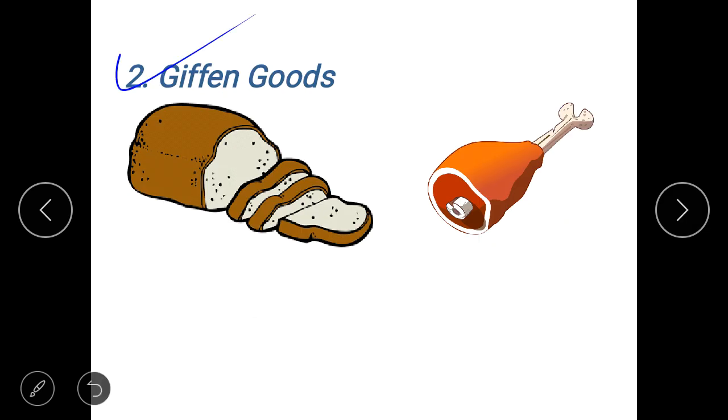Now the other kind of good that does not abide by your law of demand is the Giffen good. A Scottish economist Sir Robert Giffen discovered a very interesting phenomenon in Britain in the 19th century, when the price of the bread increased, the quantity demanded of bread instead of decreasing, it further increased.